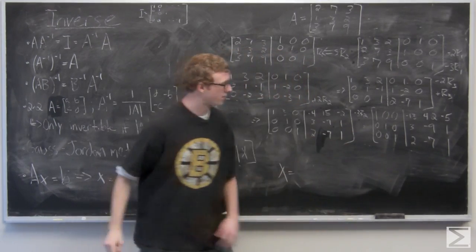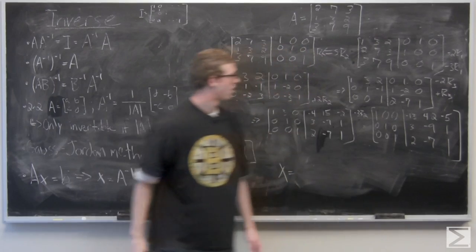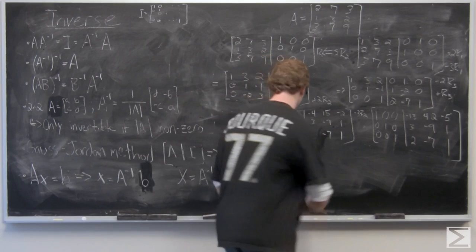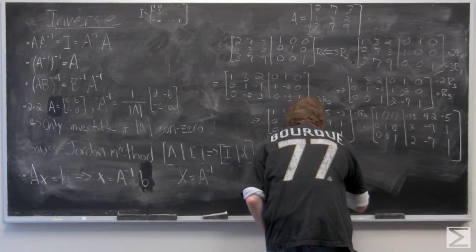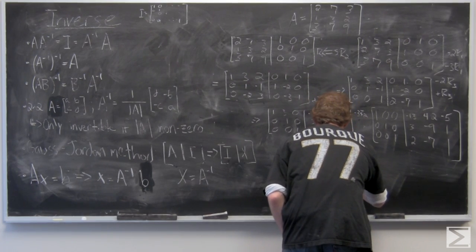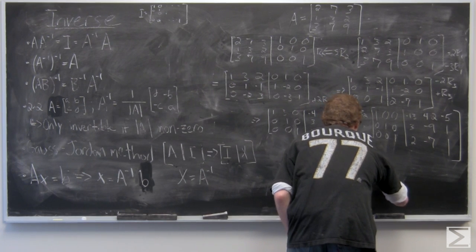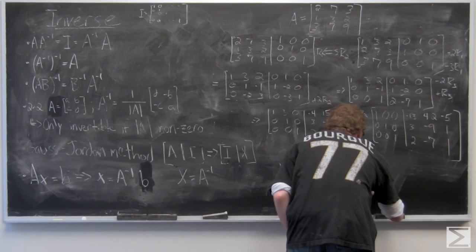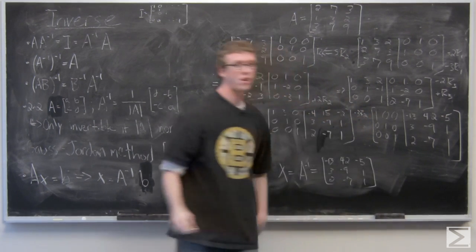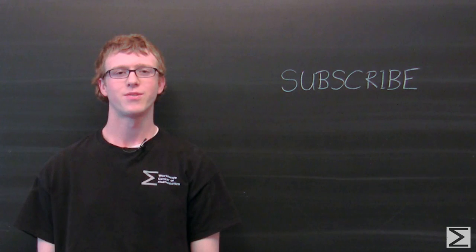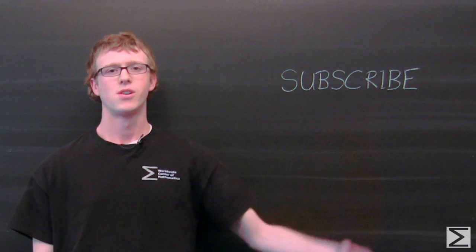So we have our resultant on the right side there. That's our resultant matrix, and that is X, which is A inverse. And that is how you use the Gauss-Jordan method to invert a matrix.